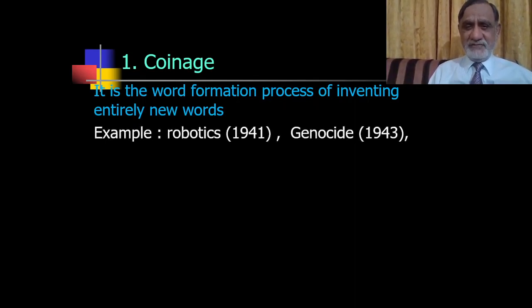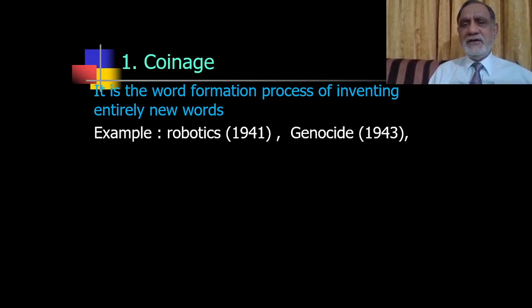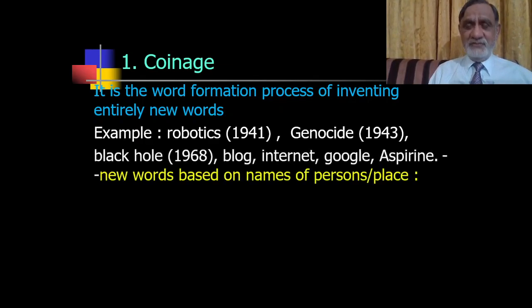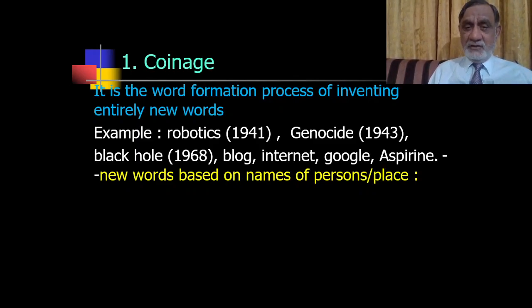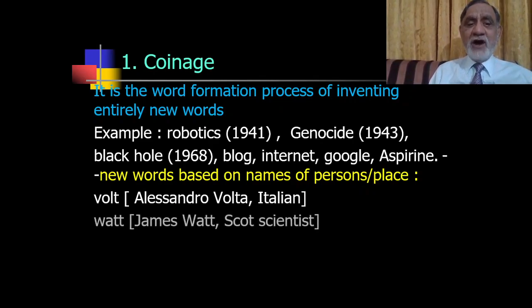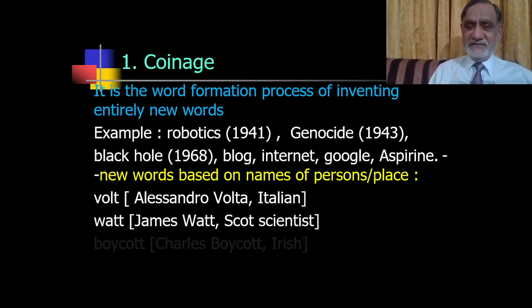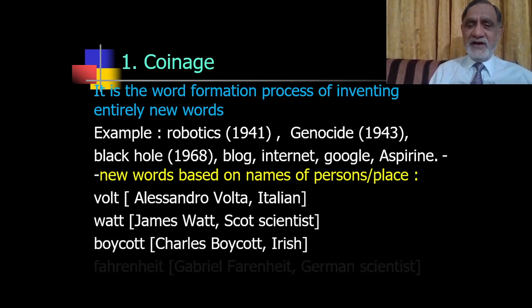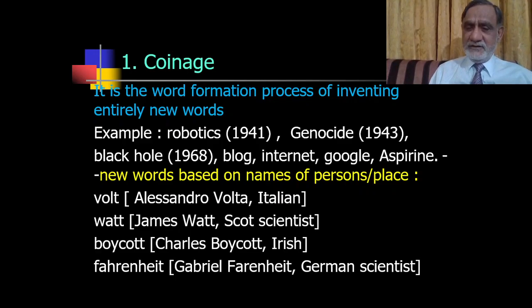There is also a subcategory of coinage: new words based on names of persons and places. For example, 'volt' from an Italian person, 'watt' from Scottish scientist James Watt, 'boycott' from an Irish person, and 'Fahrenheit' from a German scientist. These are instances of words coined from proper names.